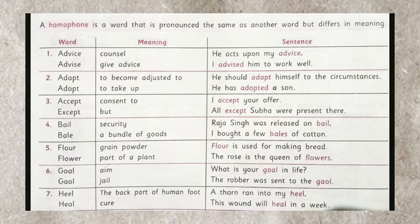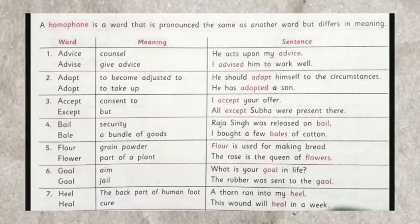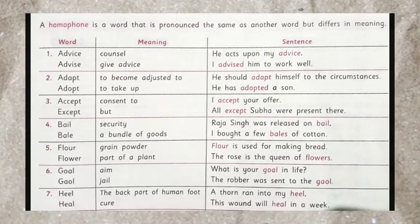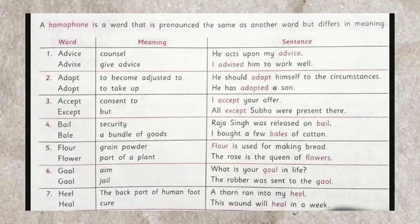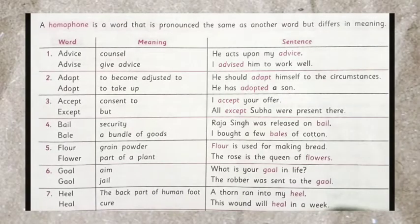Next homophones are 'flour' and 'flower'. Flour, F-L-O-U-R, means grain powder. A sentence could be: Flour is used for making bread. And flower, F-L-O-W-E-R, means part of a plant. Sentence: The rose is the queen of flowers.